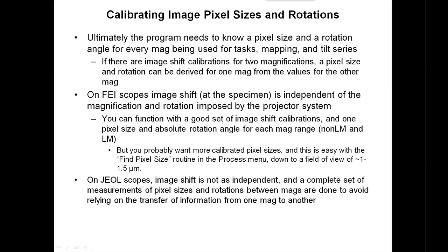You probably want more pixel sizes calibrated because this is what goes into the headers of your image files — it's the information about your data. It's easy to find pixel sizes with the standard waffle grating using the pixel size routine in the process menu, down to a field of view of about one to one and a half microns. As long as you still have at least two blocks in each direction of the waffle grating, it can find the peaks and estimate the pixel size.